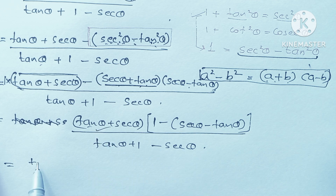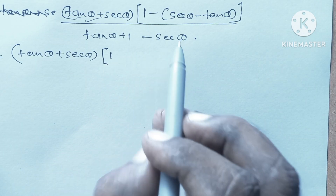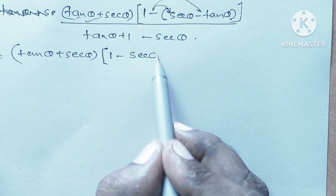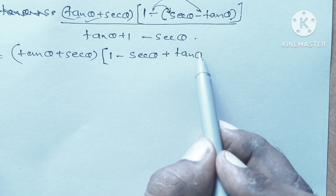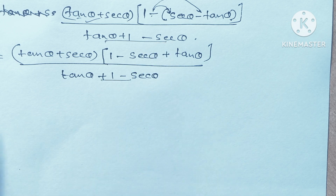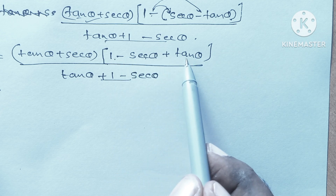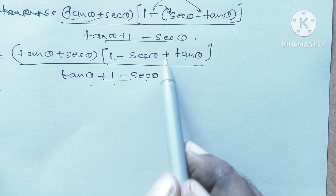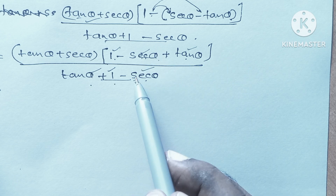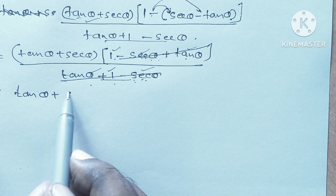Now let's see what happens. We have (tan θ + sec θ) times the bracket (1 minus (sec θ - tan θ)). When you expand the bracket, multiplying negative inside, we get 1 - sec θ + tan θ, all divided by tan θ + 1 - sec θ as the denominator. Now checking numerator and denominator: 1 - sec θ + tan θ and tan θ + 1 - sec θ are the same. So this common term cancels and the result is tan θ + sec θ.